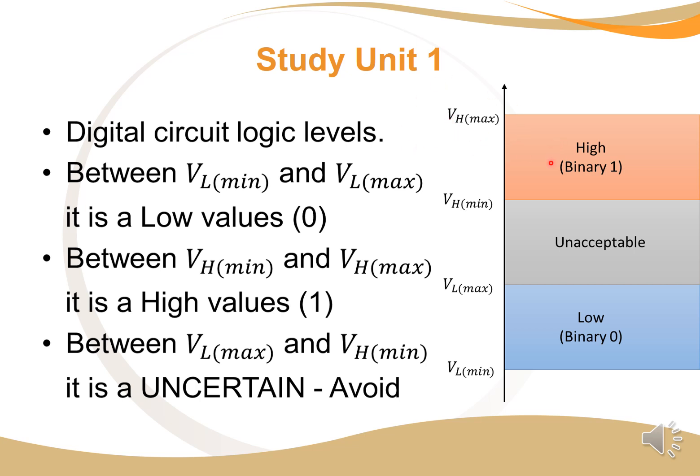Important to note, if the value is between voltage low max and voltage high minimum, it is in this gray area and it's unacceptable or uncertain. This means the circuit doesn't know if it's a high or a low, and then the circuit doesn't react or respond the way it needs to or the way we think it will.